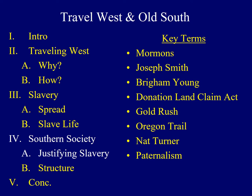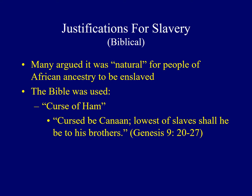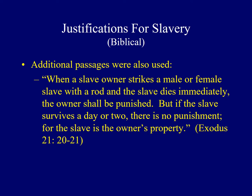White southern society in the years prior to the Civil War had several unique characteristics. A variety of justifications developed in support of the institution of slavery. The arguments were racist, and many declared it was natural for those of African ancestry to be enslaved. The Bible was used to justify slavery, as many pointed to the curse of Ham, where Noah cursed the son of Ham, declaring, 'Cursed be Canaan, lowest of slaves shall he be to his brothers,' found in Genesis chapter 9. Other passages were also used to justify harsh treatment, like one from Exodus: 'When a slave owner strikes a male or female slave with a rod and the slave dies immediately, the owner shall be punished. But if the slave survives a day or two, there is no punishment, for the slave is the owner's property.'